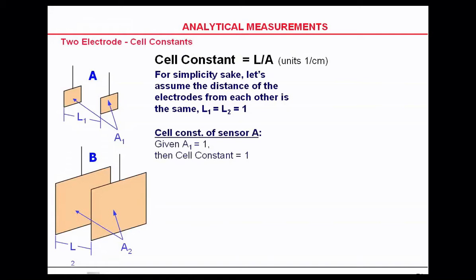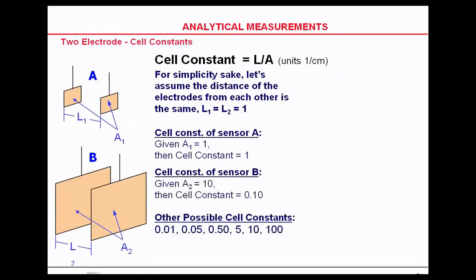You'd use different cell constants for different measurements. A 0.01 might be used for 0 to 2 microsiemens. A 0.1 might be used for 0 to 200 microsiemens. A cell constant of 10 for each plate and the distance between them would give you a cell constant of not 10 but 0.10.